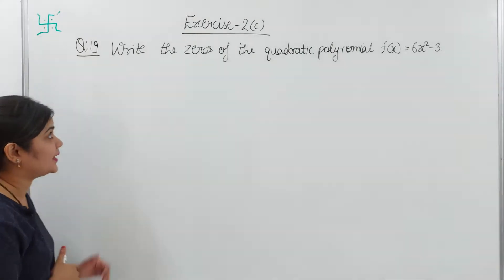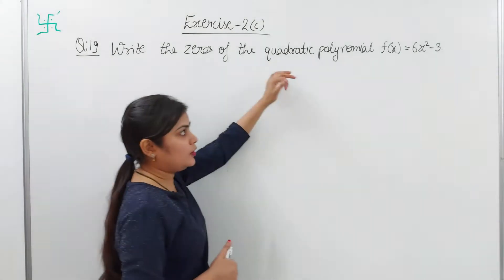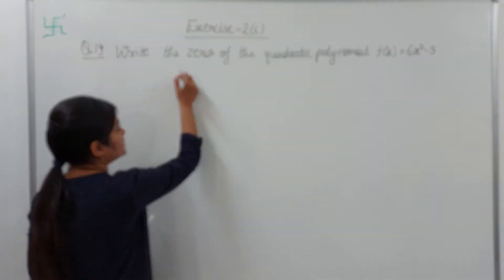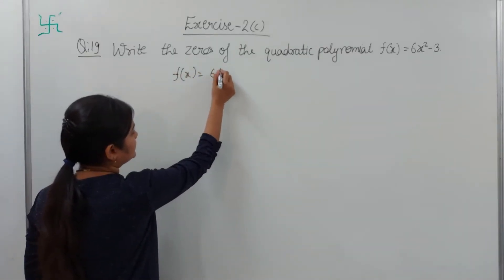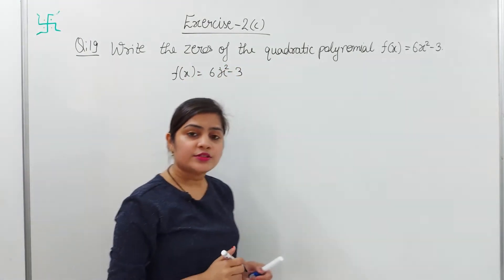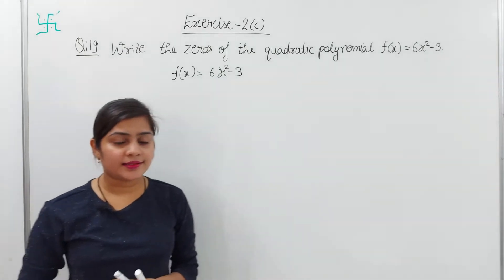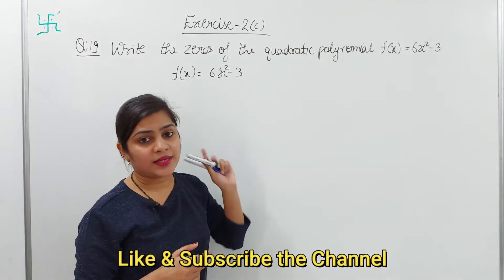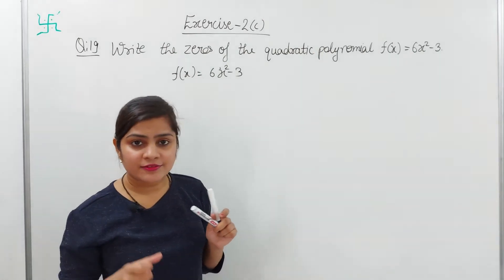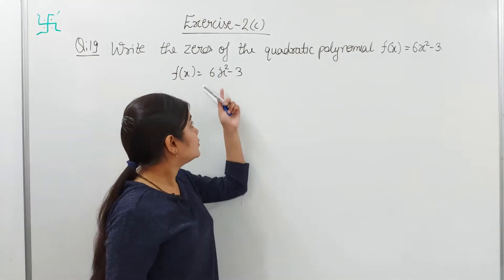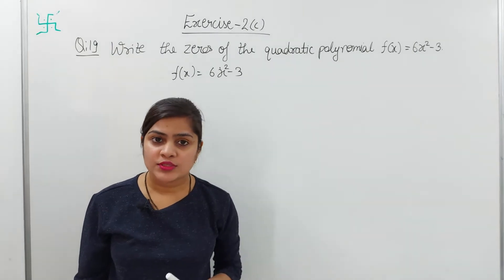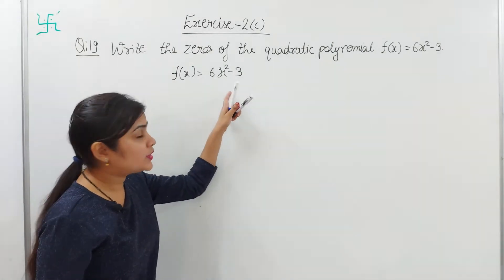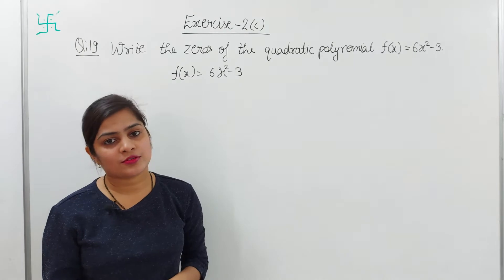Question number 19: write the zeros of the quadratic polynomial fx equals to 6x² minus 3. Zeros of the polynomial means we first factor this equation, and the value of x that comes from it makes the polynomial equal to zero. The value that makes the polynomial zero — those are called zeros of the polynomial.